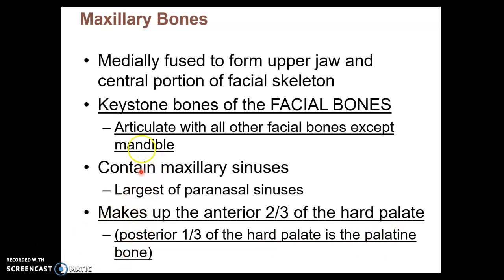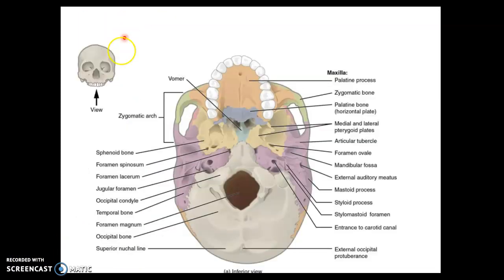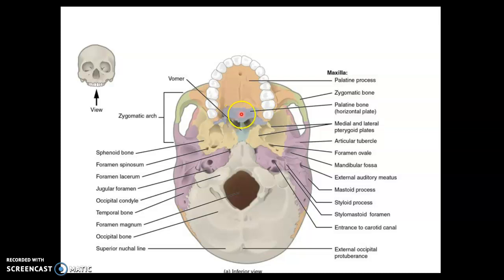Here's an inferior view of the skull with the mandible removed, showing the hard palate — the roof of your mouth. The majority of the hard palate, two-thirds of it, is part of the maxilla, and we call this portion the palatine process. The posterior one-third of the hard palate is its own bone, called the palatine bone. So the maxilla includes the upper jaw above your upper teeth, extends around the nasal cavity, and also includes the roof of your mouth — the palatine process — which is distinct from the palatine bone.